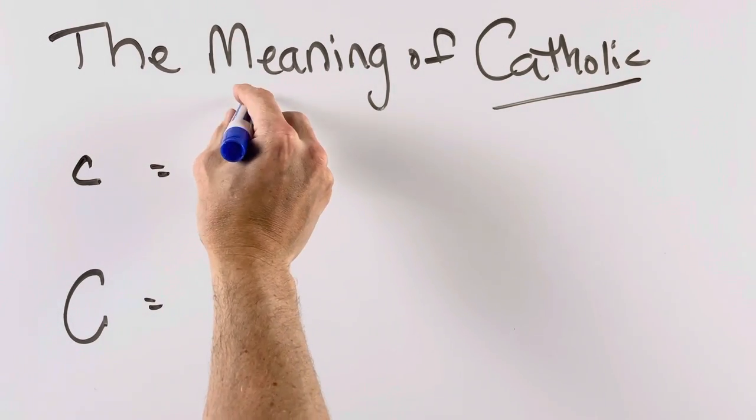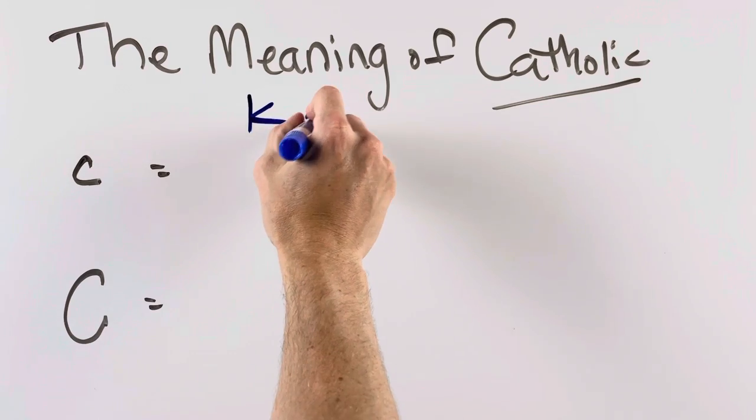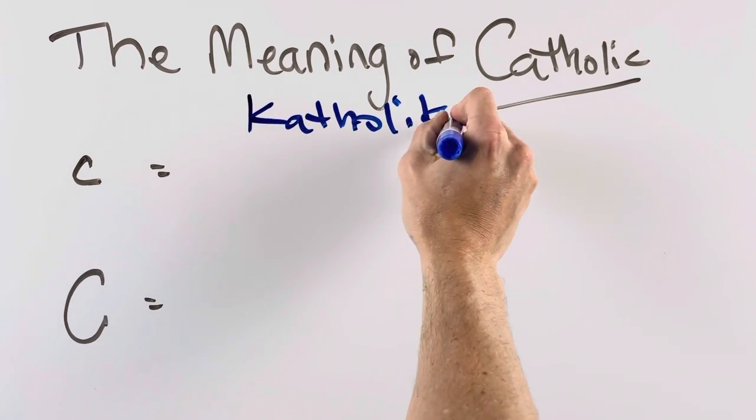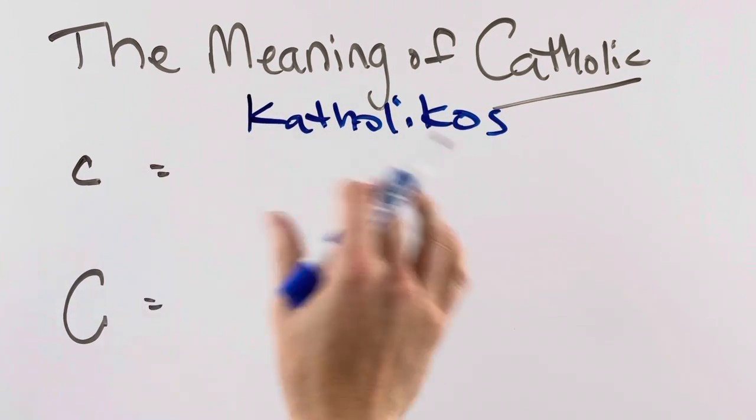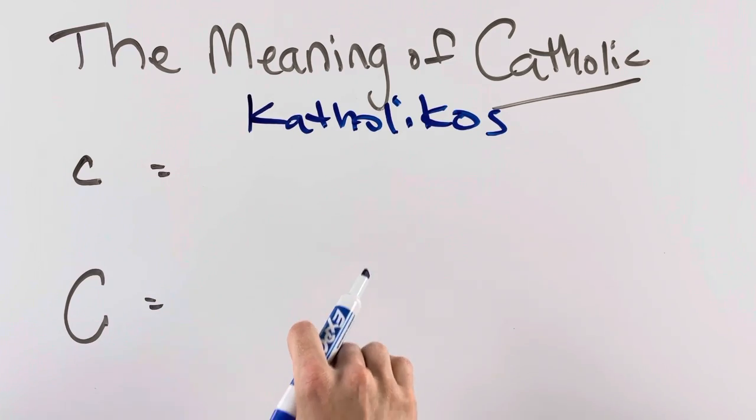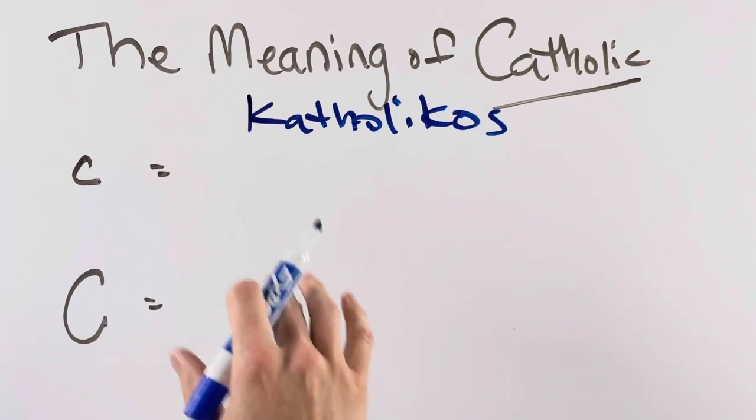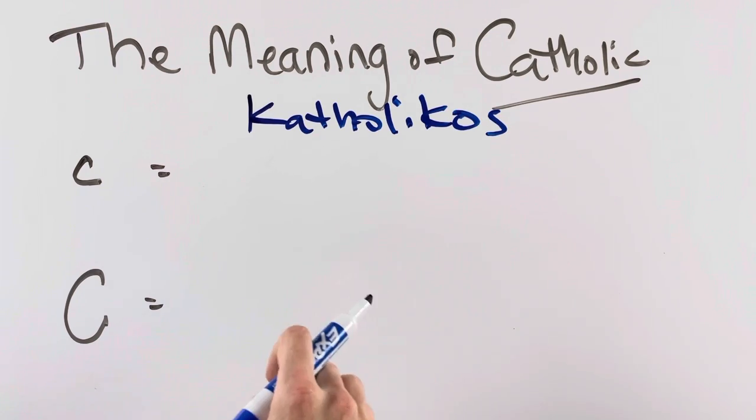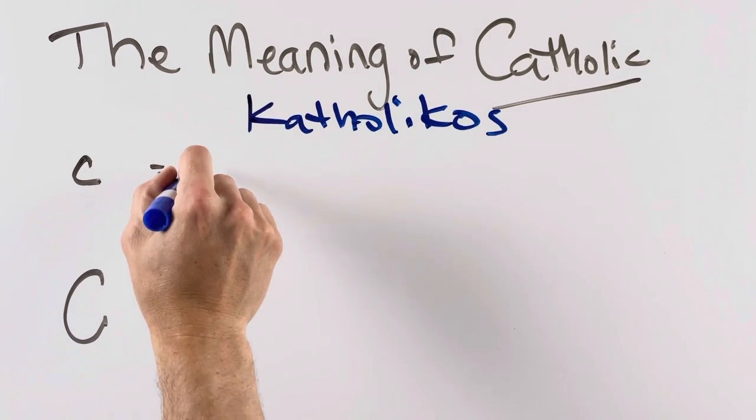Well, it comes from the original Greek word catholikos, and that word means universal. So when we talk about in the creed one holy Catholic and apostolic church, we're talking about a Catholic Church that is universal.